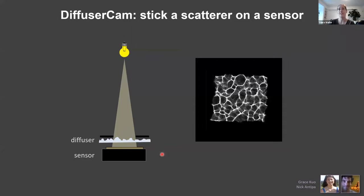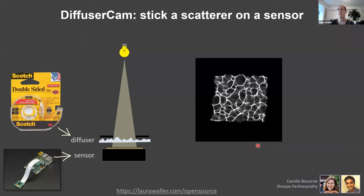So you've got this diffuser and you capture an image with a point source. It looks like this weird caustic pattern, like the bottom of a swimming pool on a hot day — that's exactly what it is, random focusing essentially. As long as you know this point spread function, it's okay that it's weird. We had some awesome undergrads, Camille and Trias, who spent their summer building this with Scotch tape and a Raspberry Pi sensor — extremely cheap. They wrote up open source code and instructions for it if you want to build one at home.